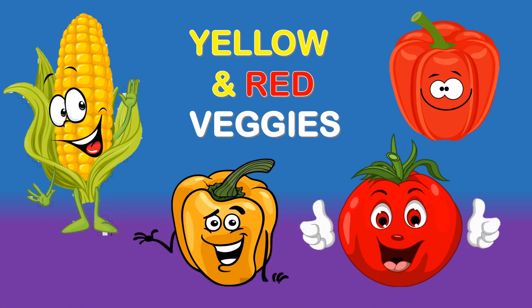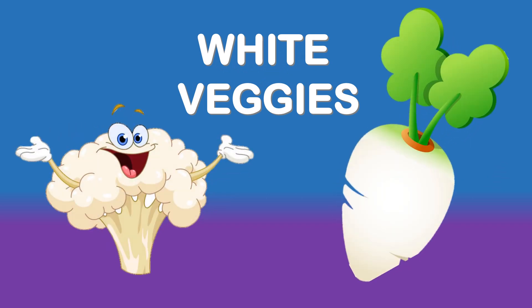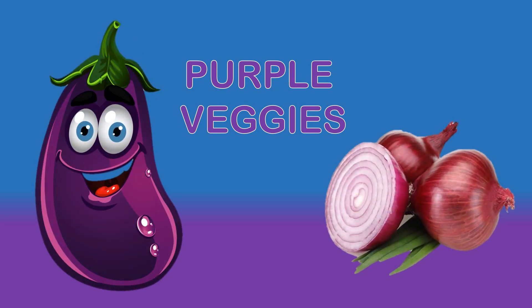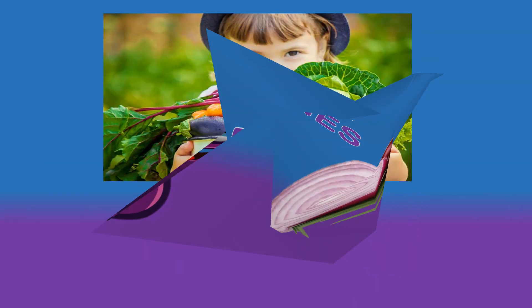What are the yellow and red vegetables? Corn, bell pepper, tomato, and red bell pepper. We will learn about white vegetables: cauliflower and radish — they come in white color. The purple vegetables: brinjal and onion — they come in purple color.